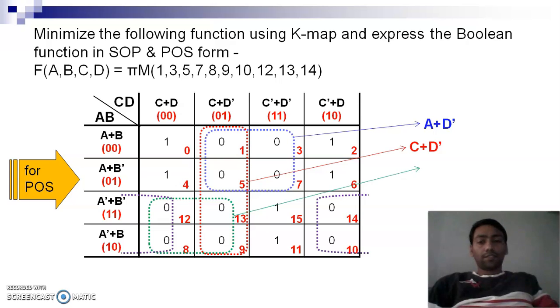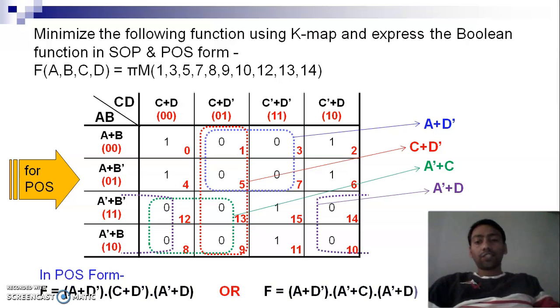The next group is represented by green block. The equation should be A complement plus D. If we talk about a minimized POS expression, at least the same thing, if we talk about the different margin.